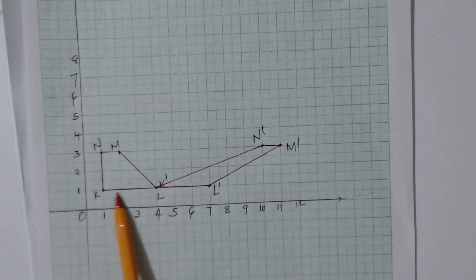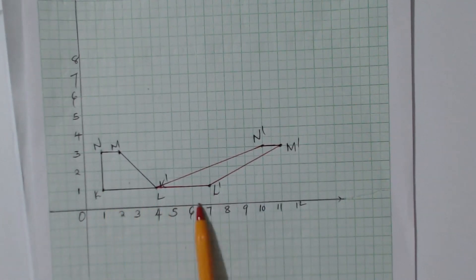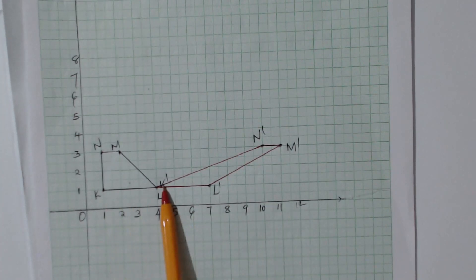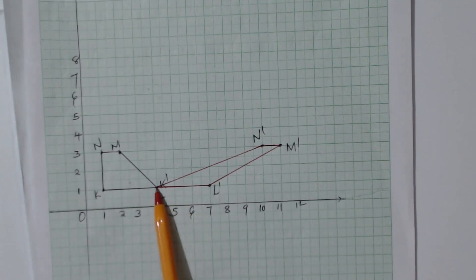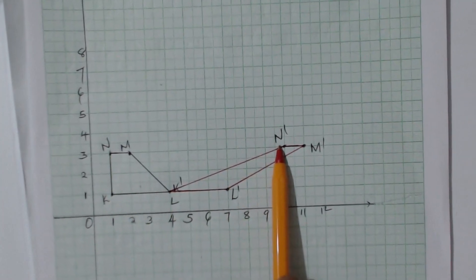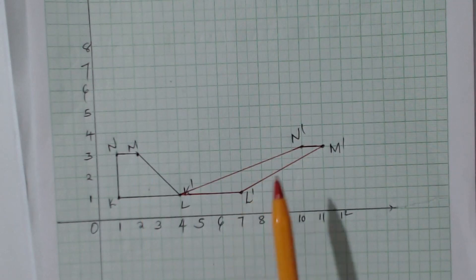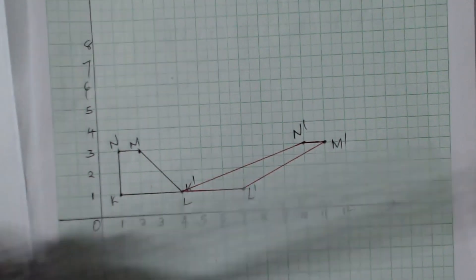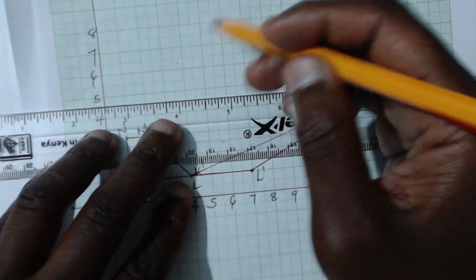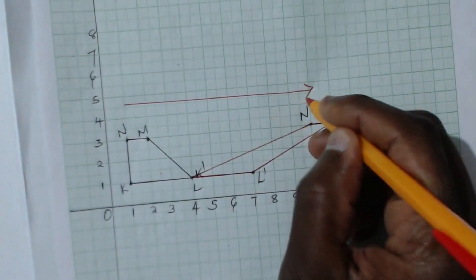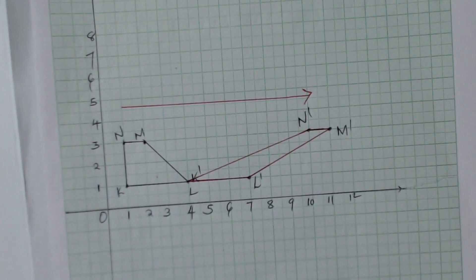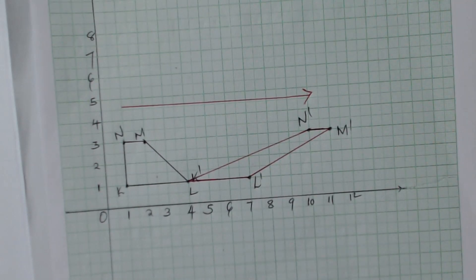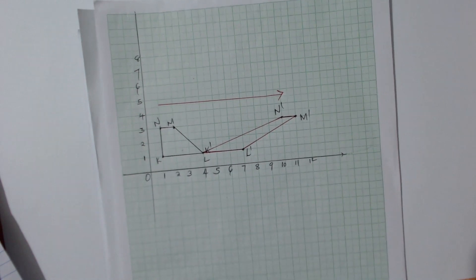Look at each point: K is moving parallel to the x-axis. L, N, and M and their images all show movement parallel to the x-axis. The shape has been altered, and the transformation that alters the shape while depicting this kind of parallel movement is the shear. So this is a shear that moves points parallel to the x-axis.